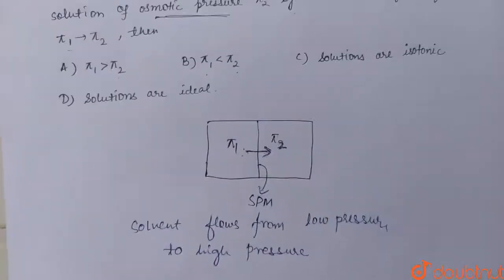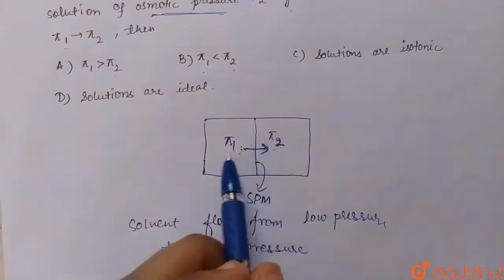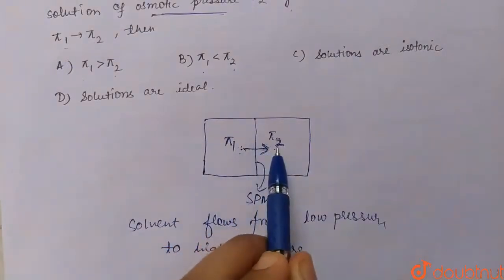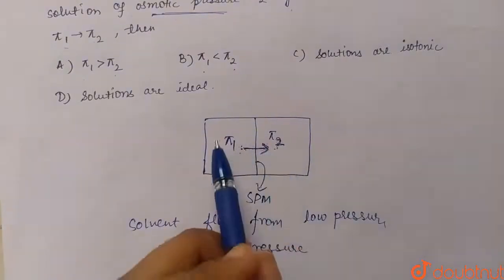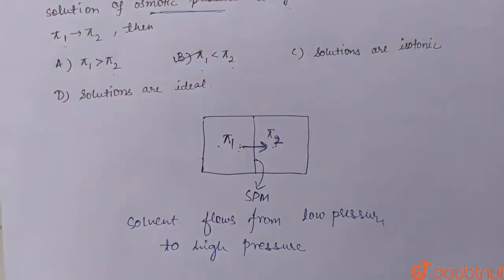Here we can see that the direction is from π1 to π2, which means π2 has more osmotic pressure than π1. So our answer will be B. I hope you understood the question. Do practice this question. Thank you.